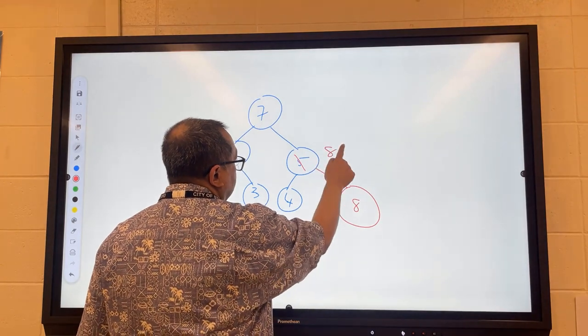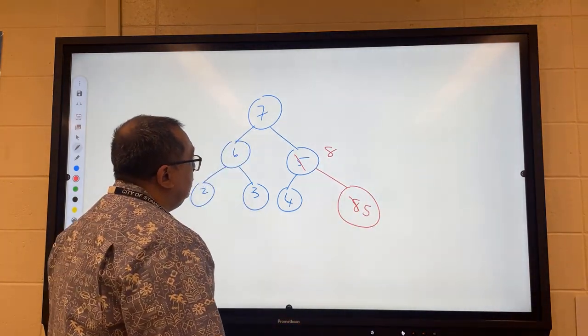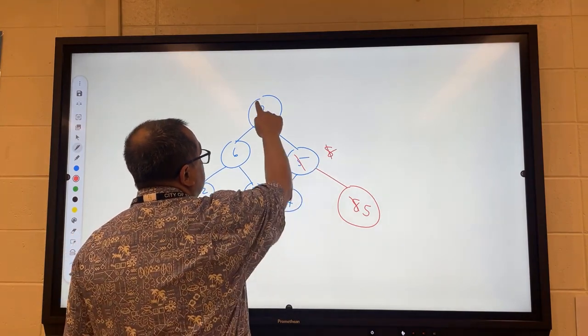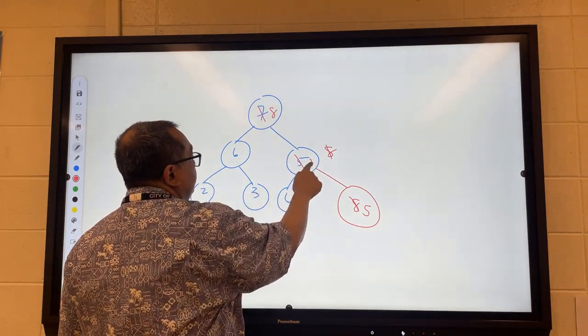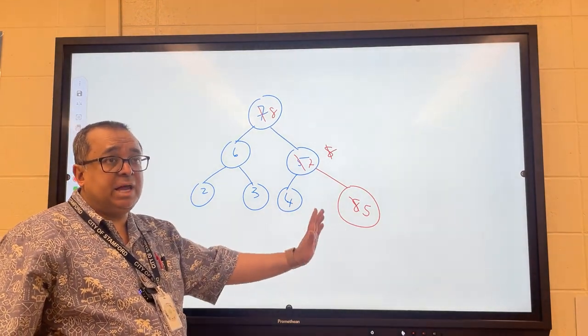What's the first thing we're going to swap it with? We swap it with the five, so put the eight here and the five here. Then what do we do? We swap the eight and the seven. When we insert, we insert in the next available slot and then bubble the number upward.